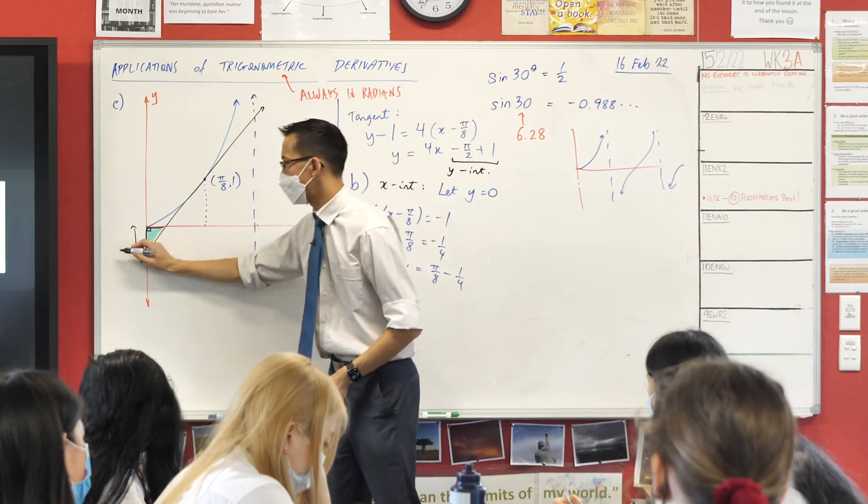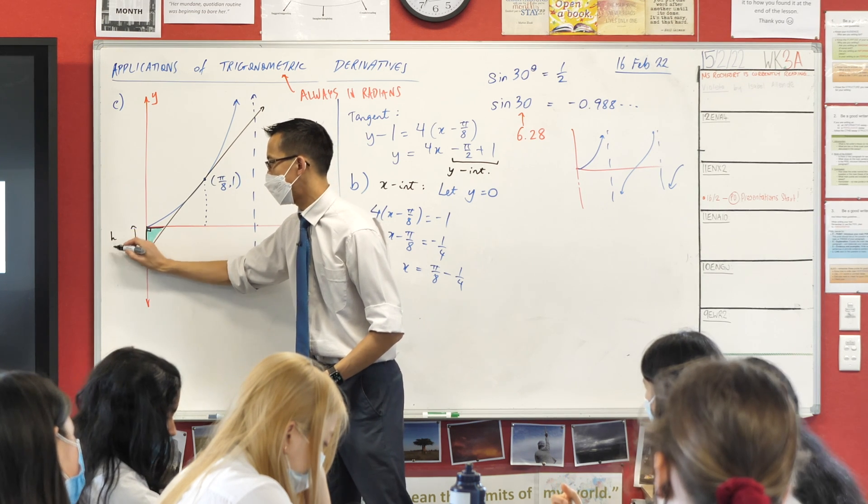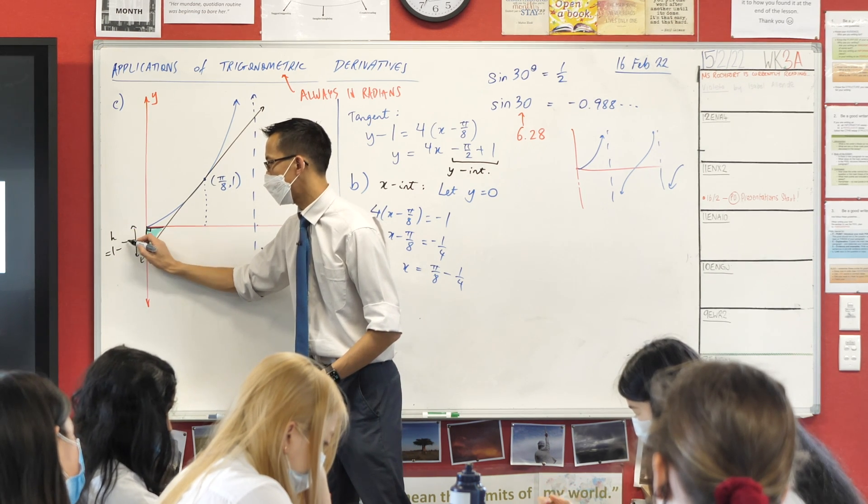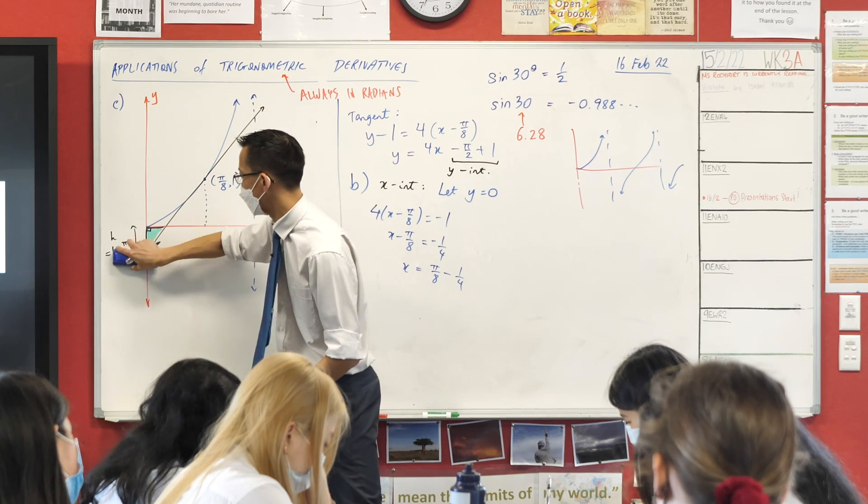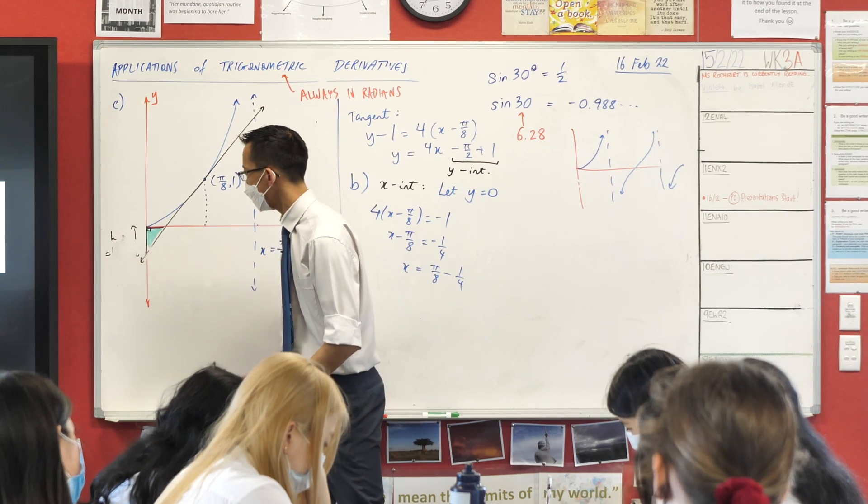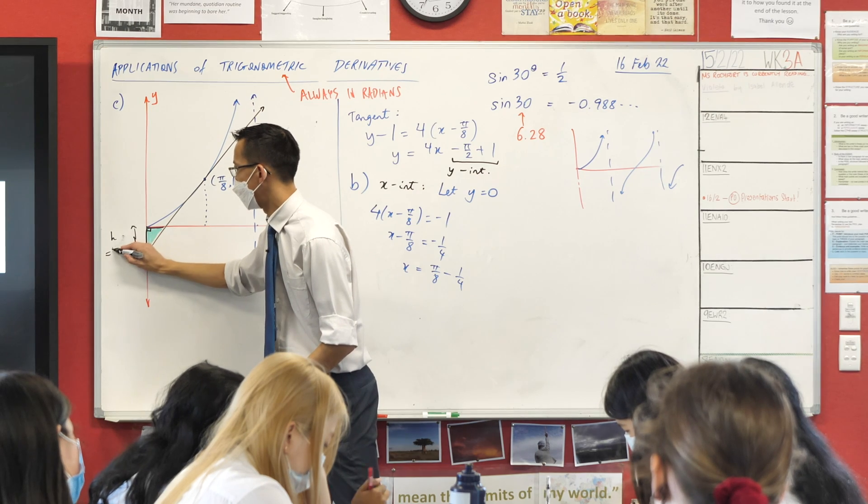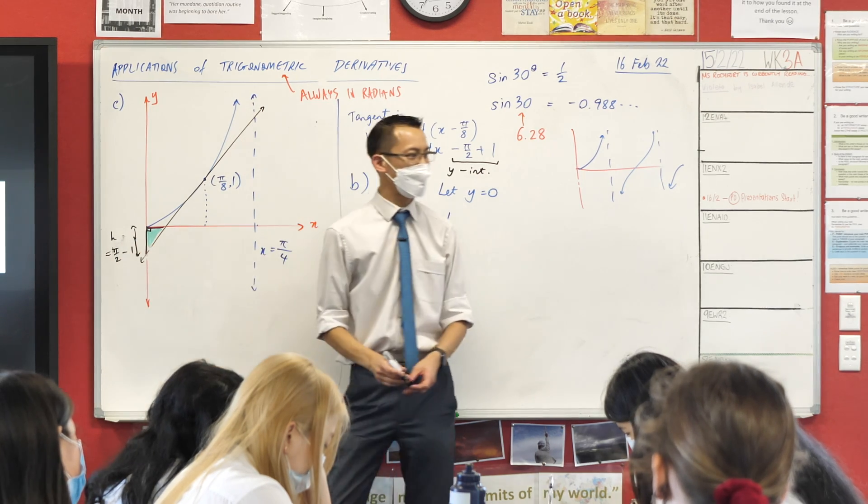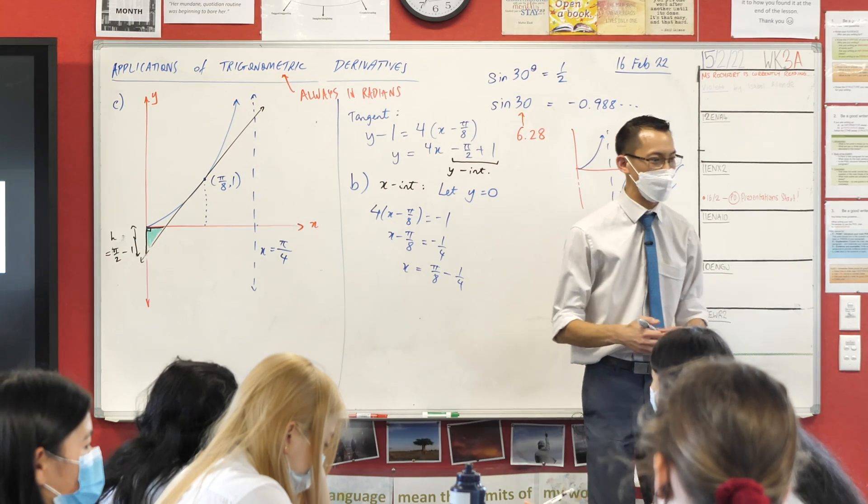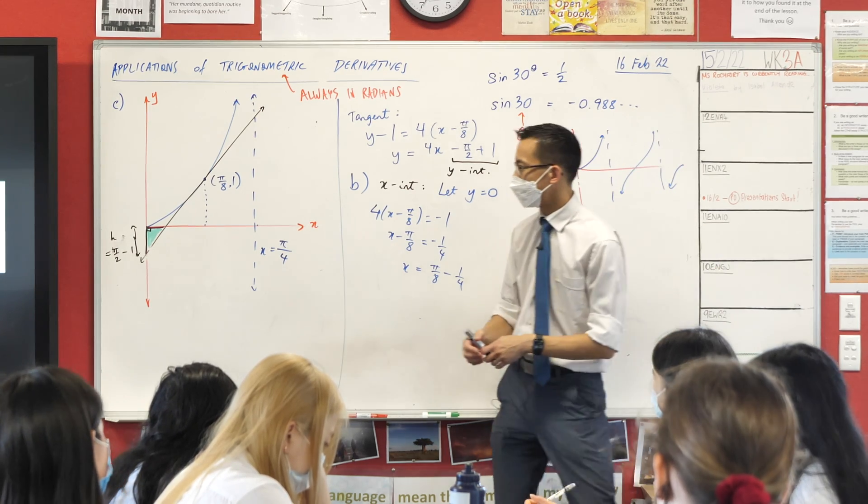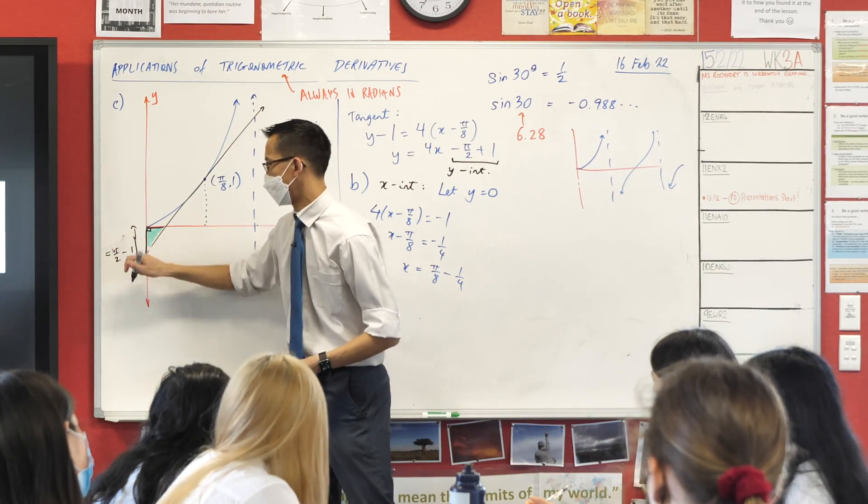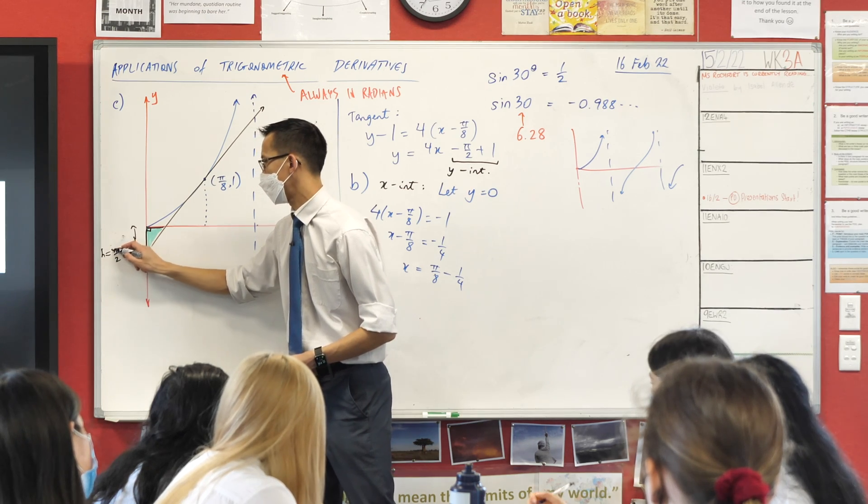So I'm going to label that as height equals—I didn't know all the way around, sorry—π on 2 minus 1. That was a bit messy. π on 2 minus 1. Can you see it gives me the same value but just the positive version? So there's the height. Boy, that's messy. Sorry, it's really bothering me. There you go. Height equals π on 2 minus 1.